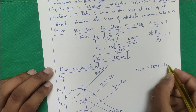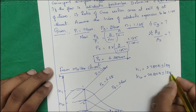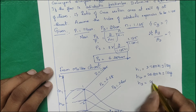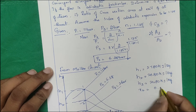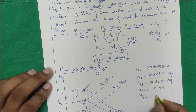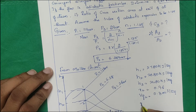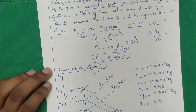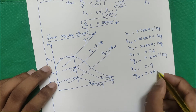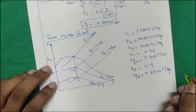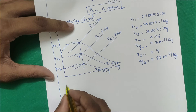From the Mollier chart, read the enthalpy values: h1 = 2780 kJ/kg, h2 = 2680 kJ/kg, and h3 (to be calculated). Also: x2 = 0.96, vg2 = 0.3 m³/kg, x3 = 0.9, vg3 = 0.88 m³/kg. Using these values, find exit and throat velocities.